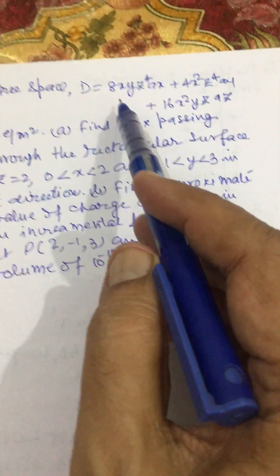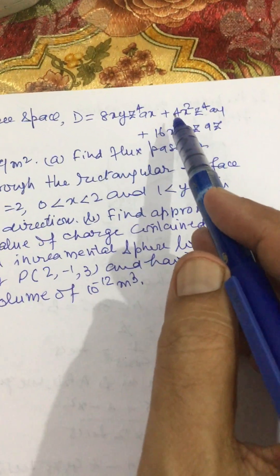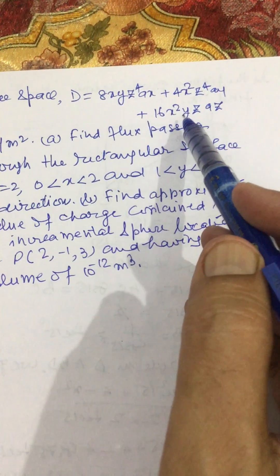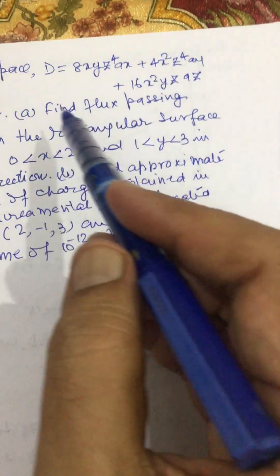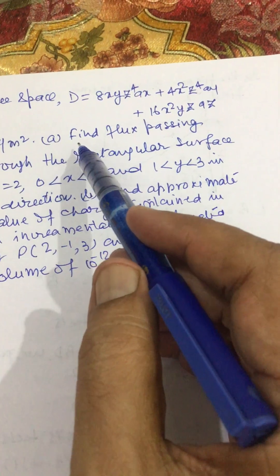In free space, D is equal to 8xyz^4 a_x plus 4x^2z^4 a_y plus 16x^2y/z^4 a_z picocoulomb per meter squared. Find the flux density.